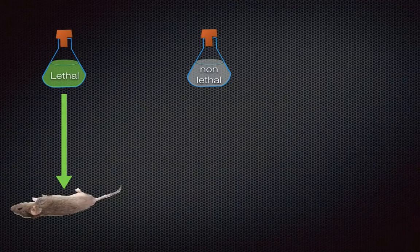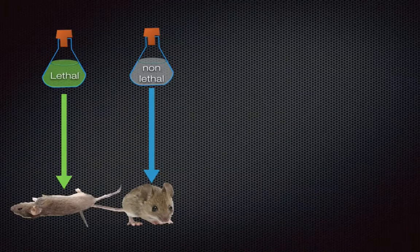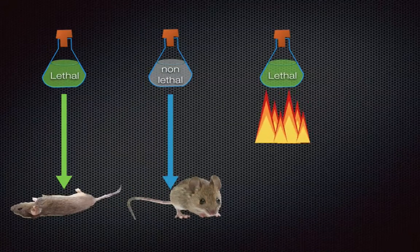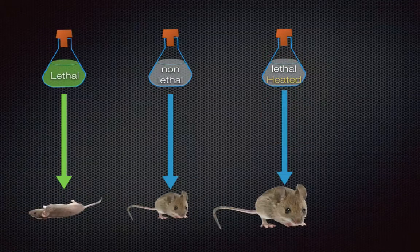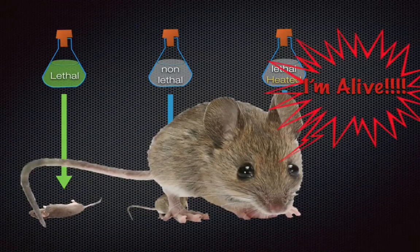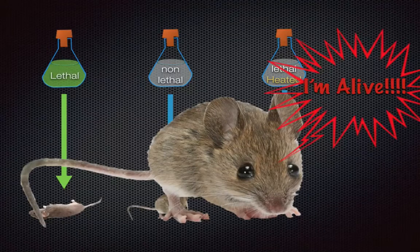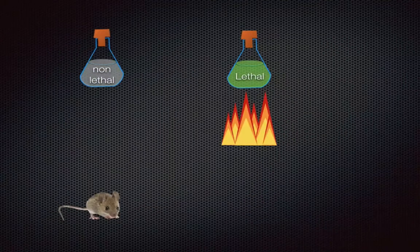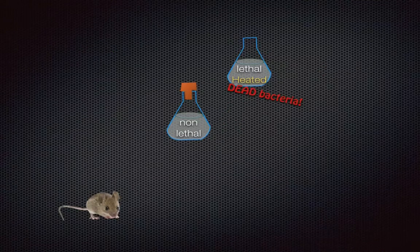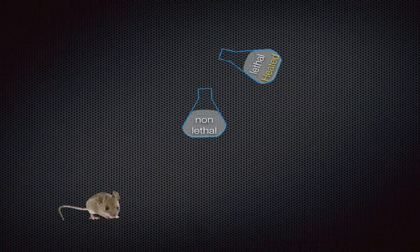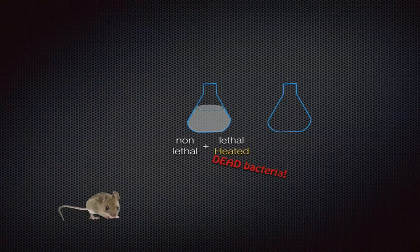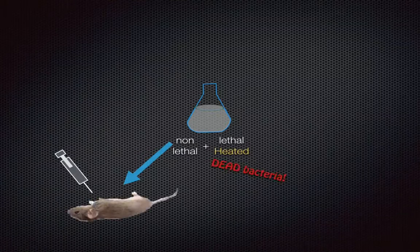Then he made a batch of non-lethal bacteria and did the same thing, and the mouse lived. But this is where things got interesting: he had a lethal batch, and he heated it until the bacteria died. He then injected this dead bacteria into a mouse, and the mouse remained alive. So even though the bacteria was once lethal, once heated and killed, it didn't kill the mouse. He then repeated this process by heating up lethal bacteria, but this time he mixed the dead lethal bacteria into a non-lethal live bacteria batch and injected this solution into a mouse — and it killed the mouse.